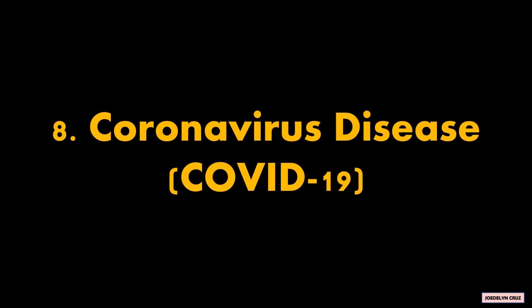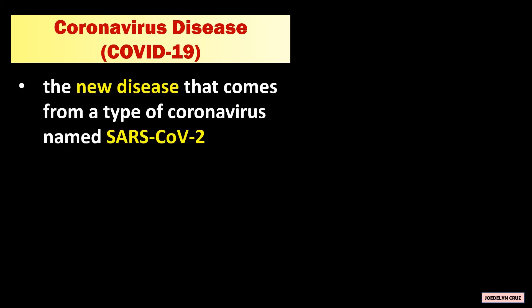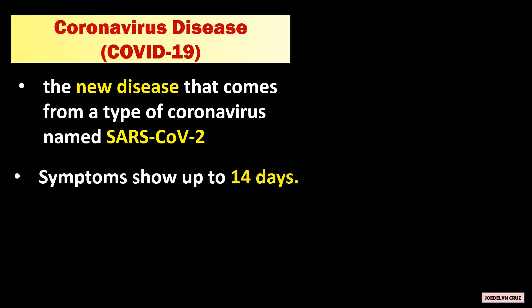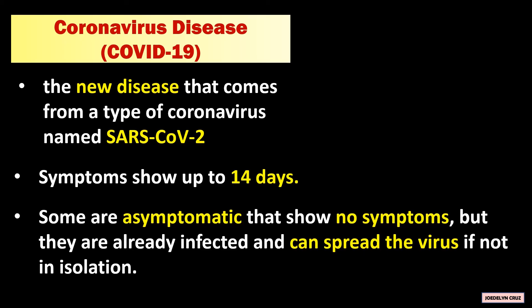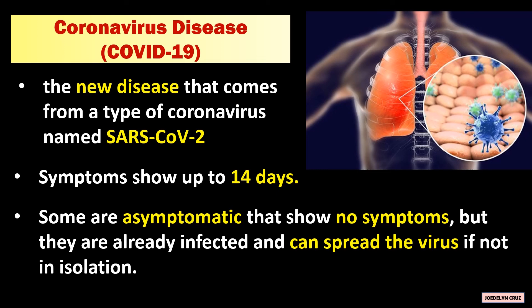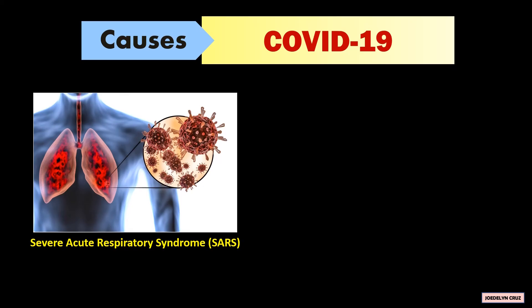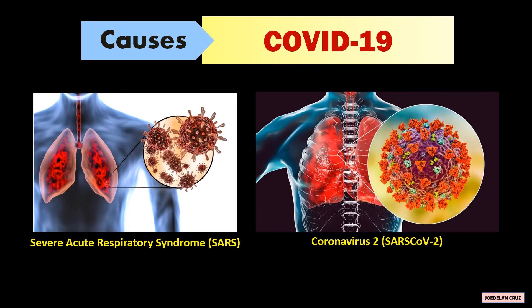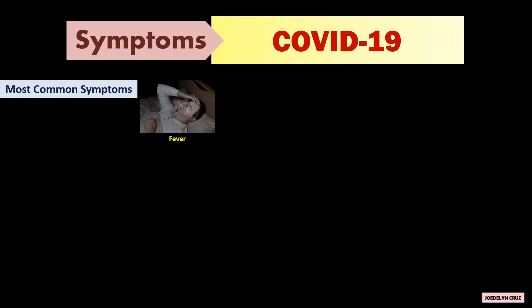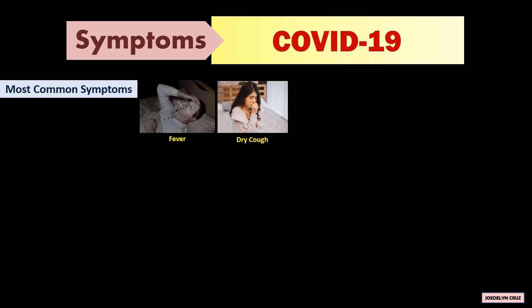Coronavirus disease, or COVID-19, is a new disease that comes from a type of coronavirus named SARS-CoV-2. Symptoms show up to 14 days after exposure. Some people are asymptomatic — they show no symptoms but are already infected and can spread the virus if not in isolation. These are the coronavirus. The most common symptoms are fever, dry cough, and tiredness.